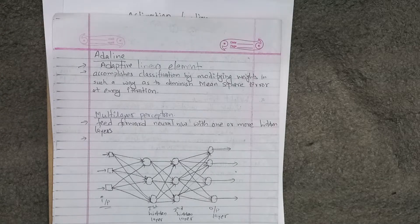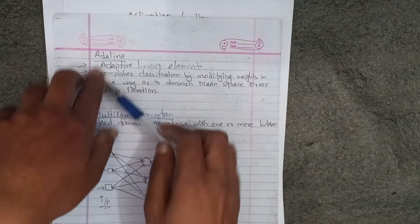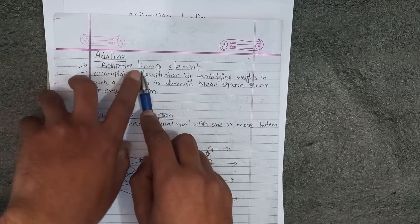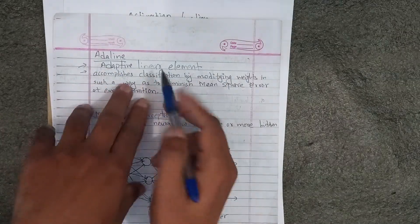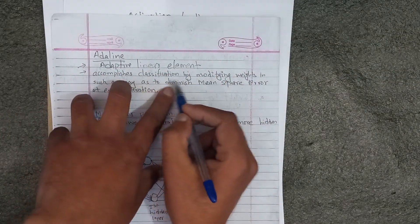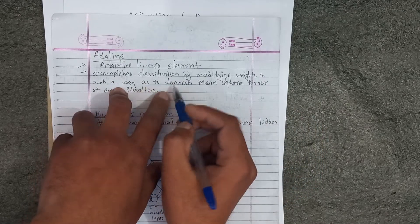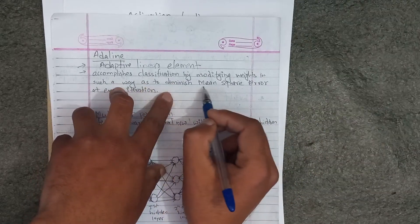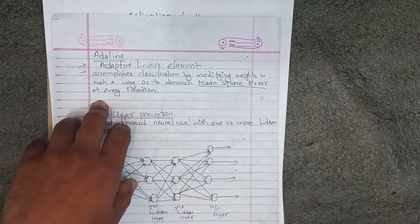To cover the syllabus, let's learn about ADALINE and multilayer perceptron, then we will go for the back propagation algorithm. This is very important. ADALINE is an adaptive linear element. It completes classification by modifying weights in such a way as to diminish mean square error at every iteration.